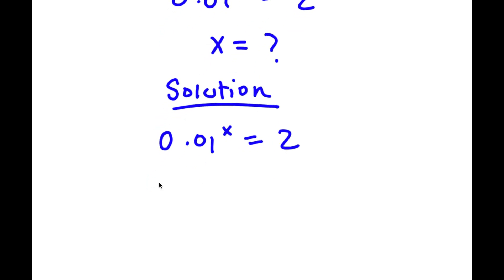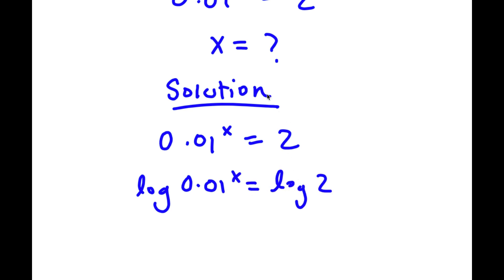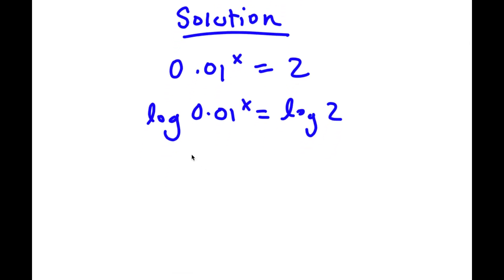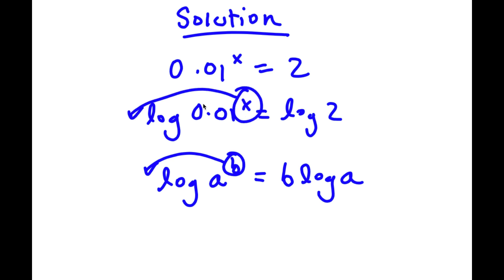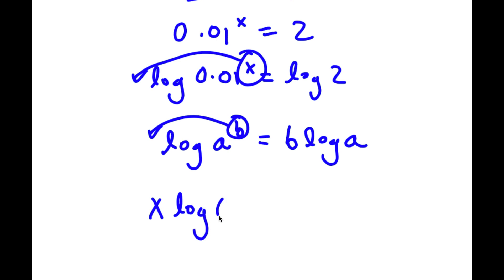I'm going to take the log on both sides. So now I have log 0.01 to the power of x is equal to log 2. If I have something in the form log a to the power of b, I can simply move this exponent b to the front, so this equals b times log a. In this case, I can move x to the front: x times log 0.01 is equal to log 2.